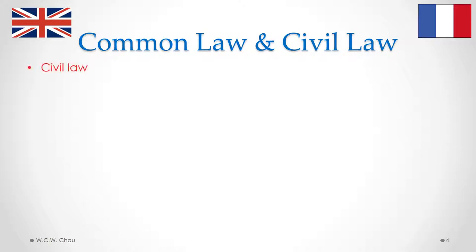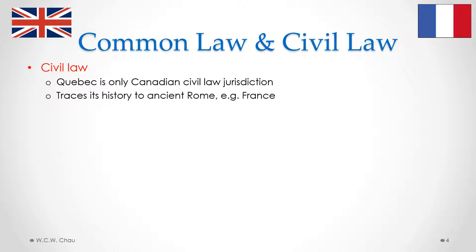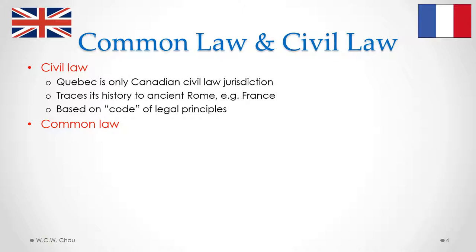In Canada, we have the civil law system and the common law system. The civil law system is found only in Quebec — Quebec is the only Canadian civil law jurisdiction. In every other province, we find the common law system. When we use the word jurisdiction, we mean a particular geographical area that uses the same set of laws. Each province can be considered a jurisdiction, as can the whole of Canada under federal laws, and a municipality in terms of the bylaws it passes.